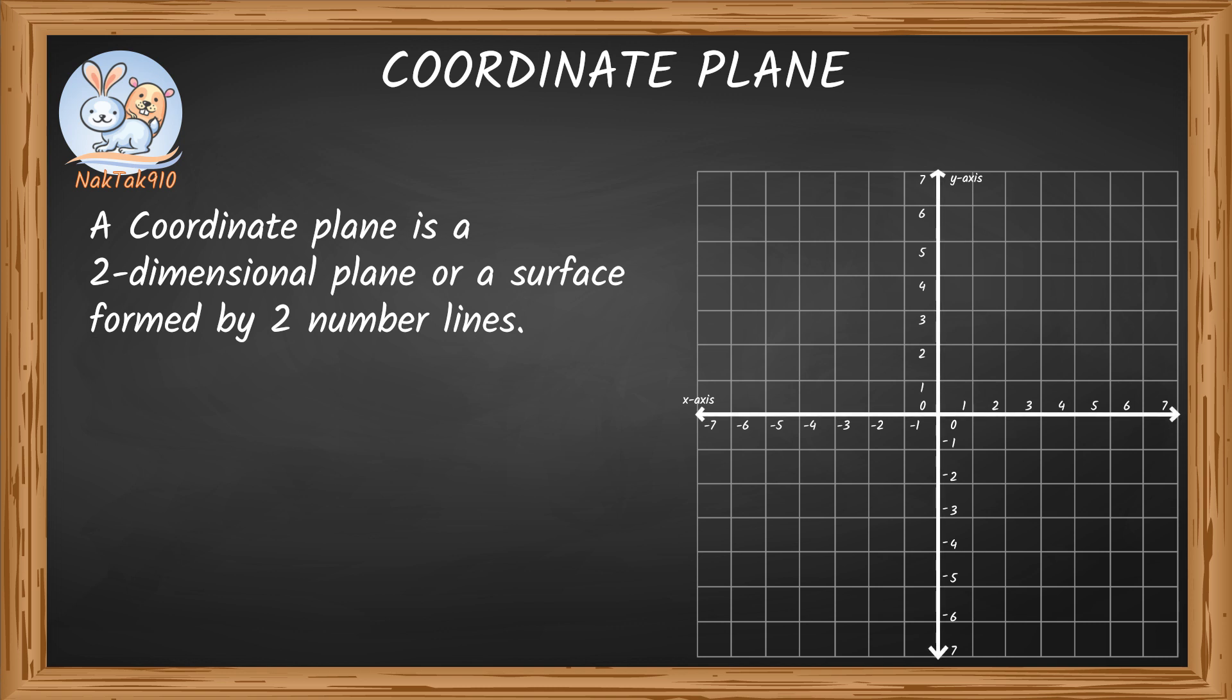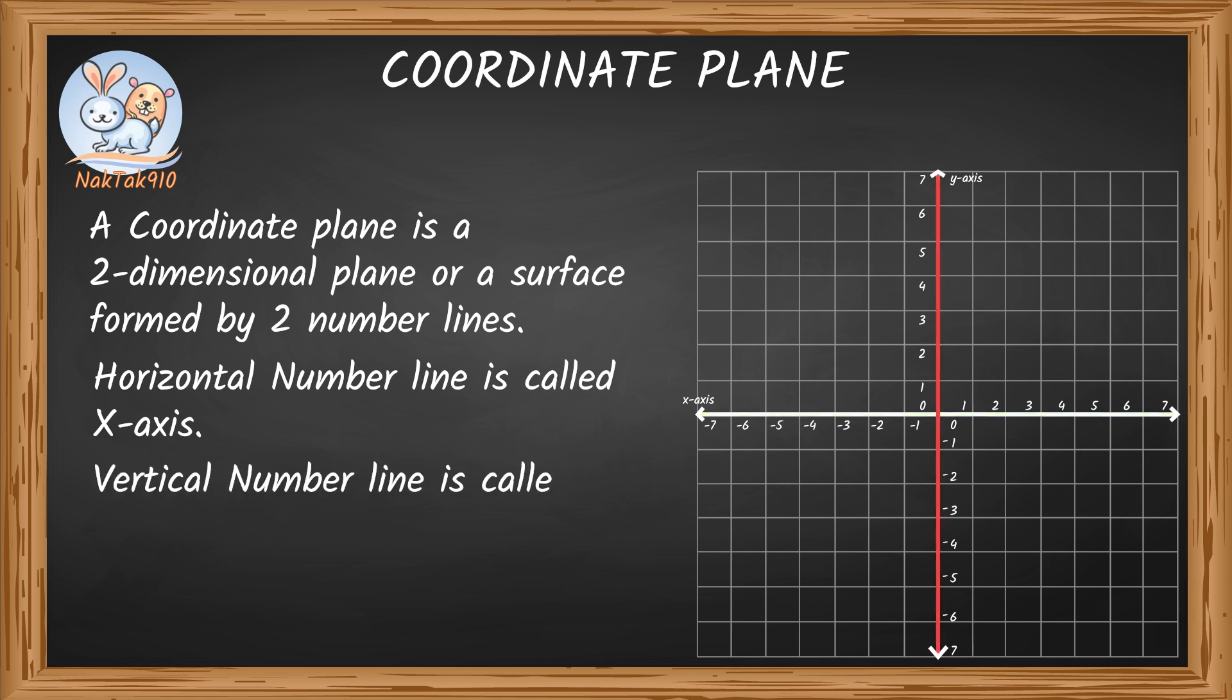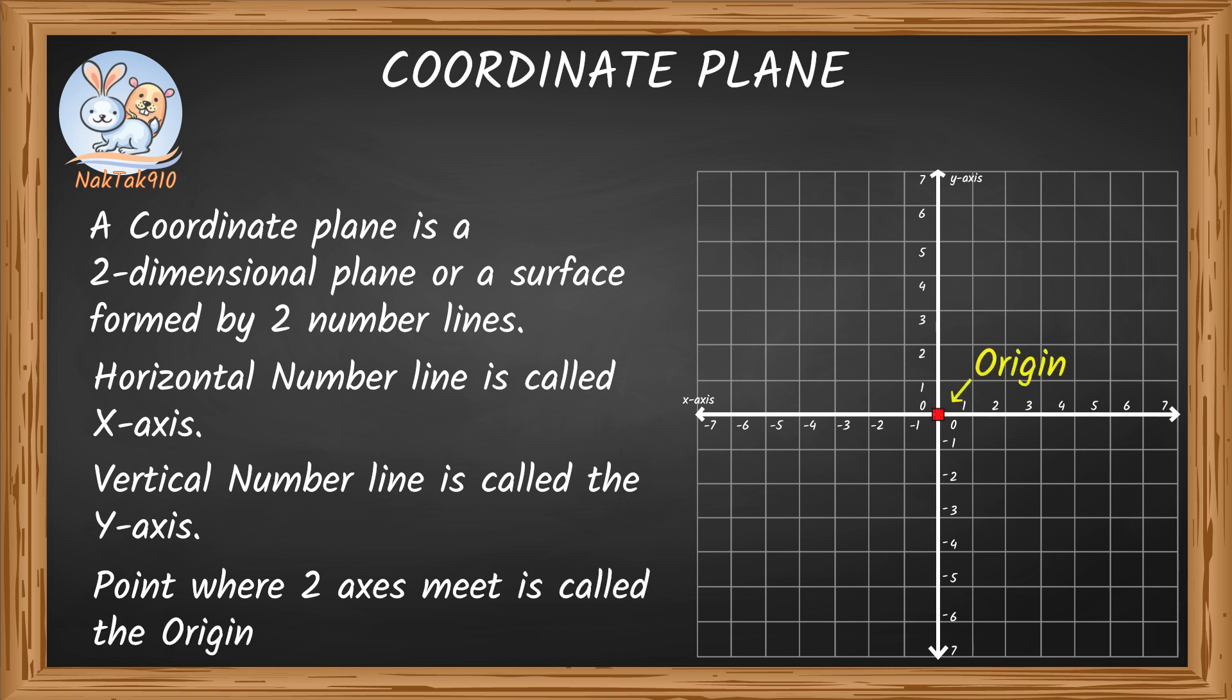These two number lines are called axes. The horizontal number line is called the x-axis. The vertical number line is called the y-axis. The point where two axes meet is called the origin.